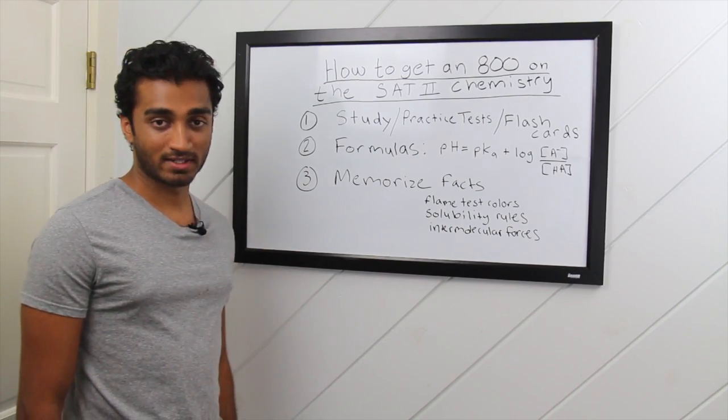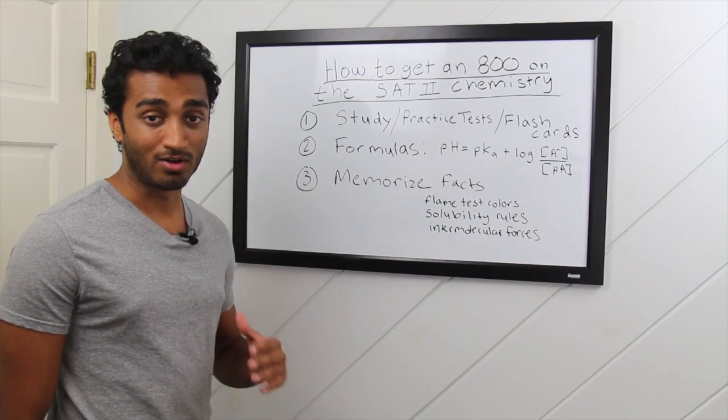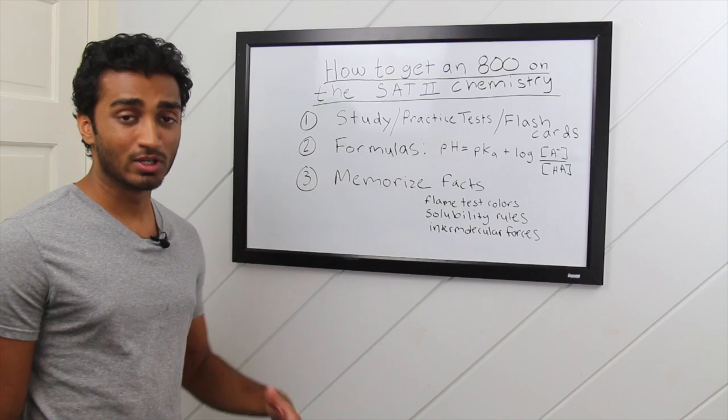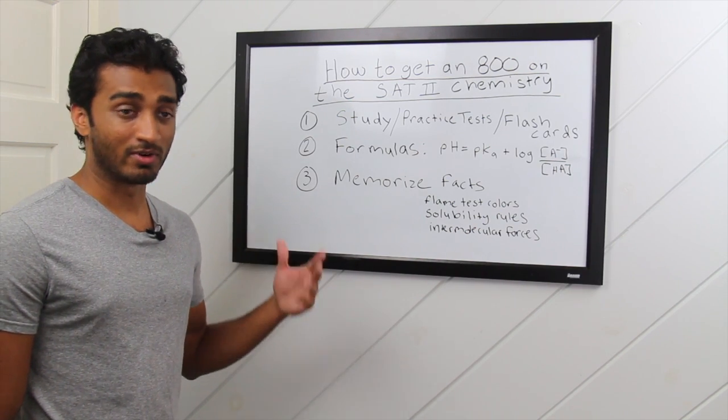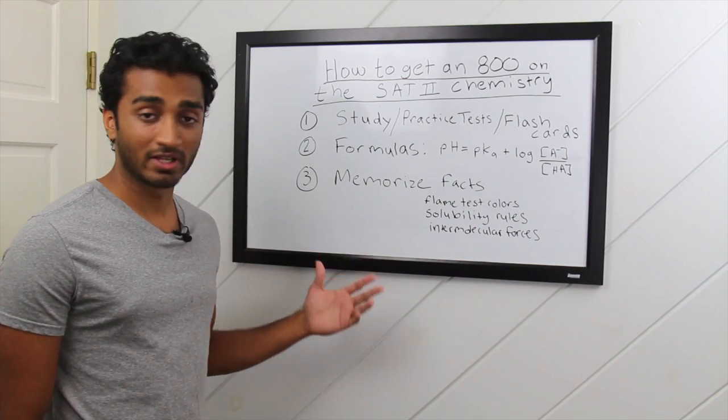Tip three: memorize facts. The SAT II chemistry exam tests facts all the time. Some of these include what color does barium glow when it's burned, or various flame test colors, solubility rules, or intermolecular forces.